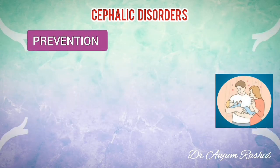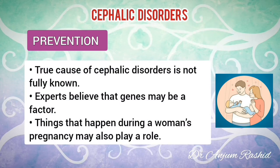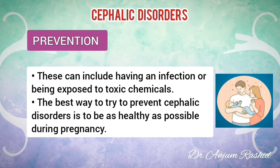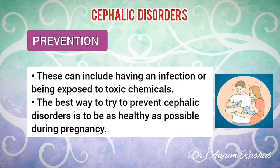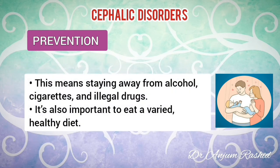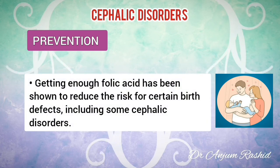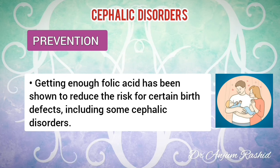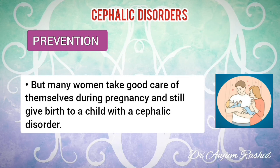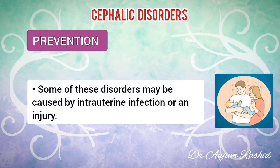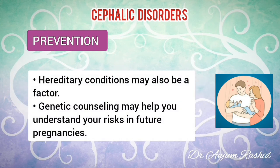The true cause of cephalic disorders is not fully known. Experts believe that genes may be a factor. Things that happen during a woman's pregnancy may also play a role, including having an infection or being exposed to toxic chemicals. The best way to try to prevent cephalic disorders is to be as healthy as possible during pregnancy. This means staying away from alcohol, cigarettes, and illegal drugs. It is also important to eat a varied healthy diet. Getting enough folic acid has been shown to reduce the risk of certain birth defects including some cephalic disorders. However, many women take good care of themselves during pregnancy and still give birth to a child with a cephalic disorder. Some of these disorders may be caused by an unidentified intrauterine infection or injury. Hereditary conditions may also be a factor, so genetic counseling may help you understand your risk in future pregnancies.